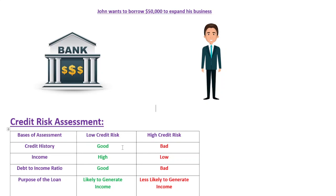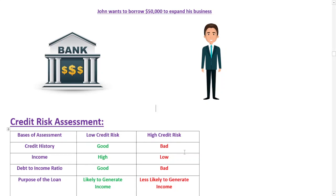Once you have assessed John's credit risk, you can decide whether to approve his loan application. If John has a low credit risk — good repayment history, good income, a healthy debt-to-income ratio, and an investment likely to generate enough income — you may approve his application and offer favorable terms. However, if John is a high credit risk — poor repayment history, insufficient income, a poor debt-to-income ratio, and an unlikely return — you may either reject his application or offer less favorable terms such as a higher interest rate or shorter repayment period.